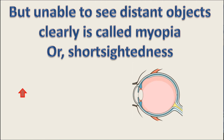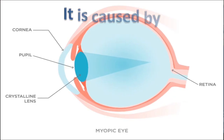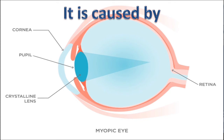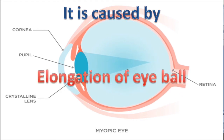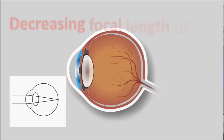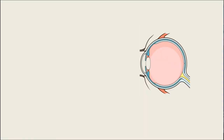In this condition, the light coming from a distant object converges before the retina, and the image of the object cannot be seen clearly. It is caused by elongation of the eyeball or increasing distance between the retina and eye lens, or by decreasing the focal length of the eye lens — that is, increasing the thickness of the eye lens — so that the ray of light converges before the retina.